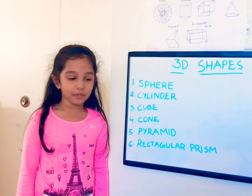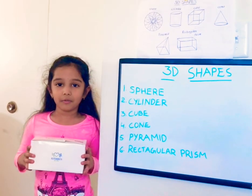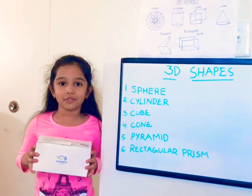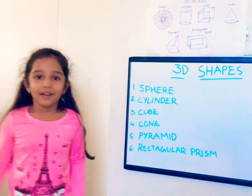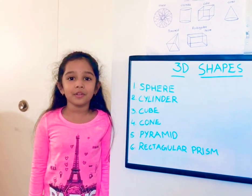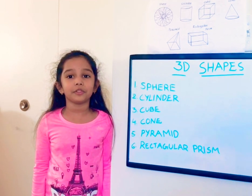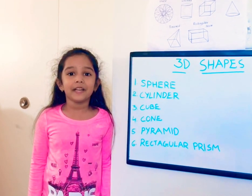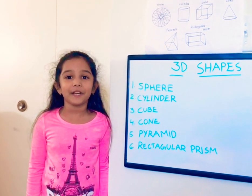Next is rectangular prism. The 3D shape of a rectangle is called a rectangular prism. I hope you learned more about 2D shapes and 3D shapes. Thanks for watching, friends!